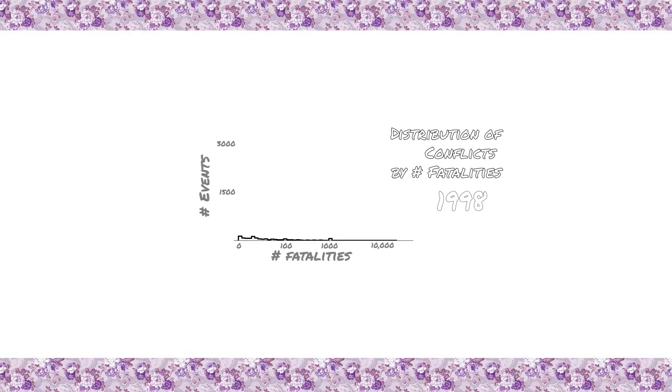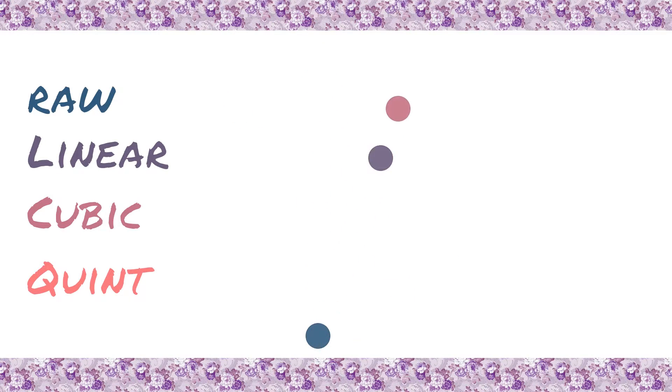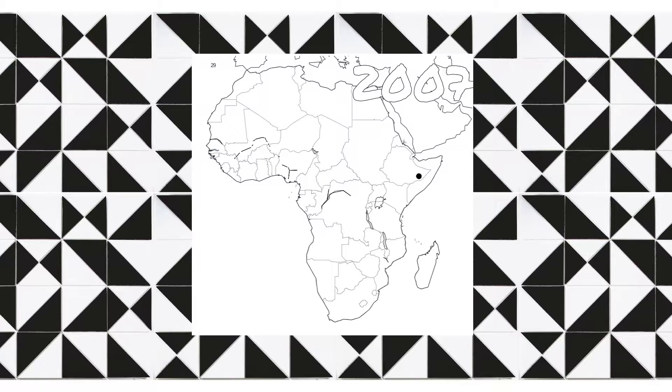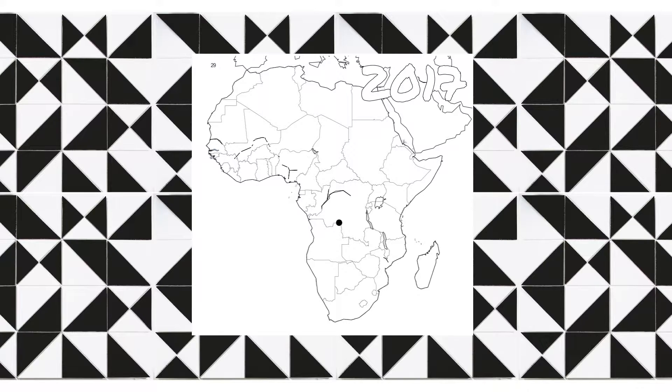We can expand on this by showing the evolution of the distribution of violent conflicts throughout Africa. This in and of itself shows that actually most don't have any fatalities. Of course we can expand this method of interpolation to two dimensions, and we're getting closer and closer to that ADD hellscape of motion. Now let's look at some two-dimensional data over time, where we plot the single most deadly event in Africa over time, where the size scales with the number of dead.